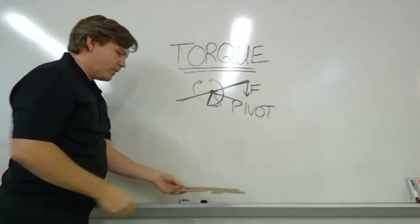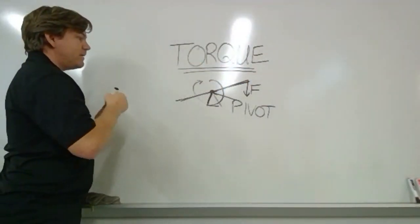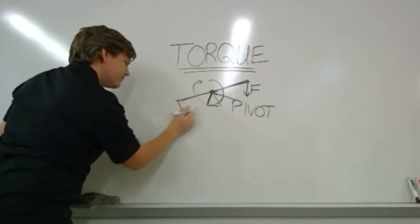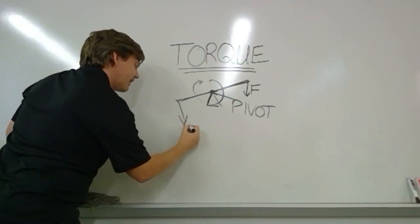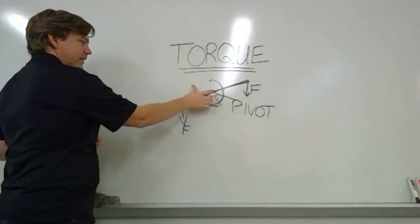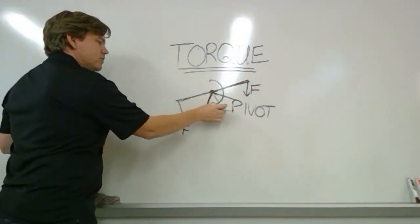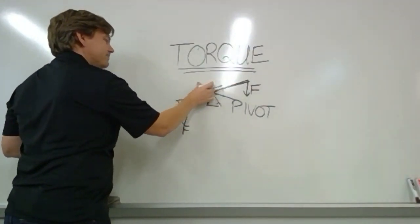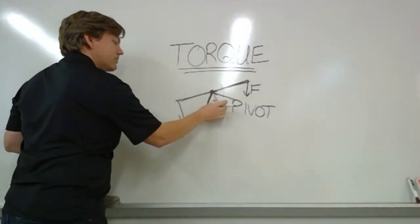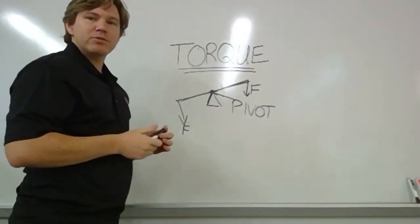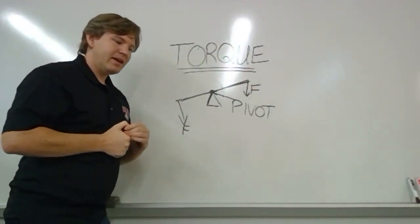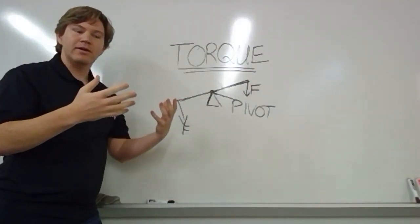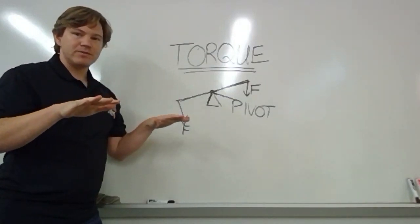And so if we go back to our teeter-totter, this would be the same as if we had another person on this side also pushing down with force. And the result of that is two competing torques that cancel each other out. And so the end result is what we in physics refer to as equilibrium. And equilibrium is when all of your force and all of your torque is balanced out.